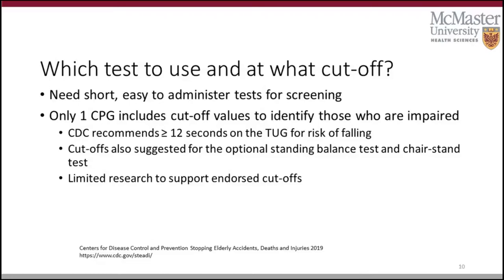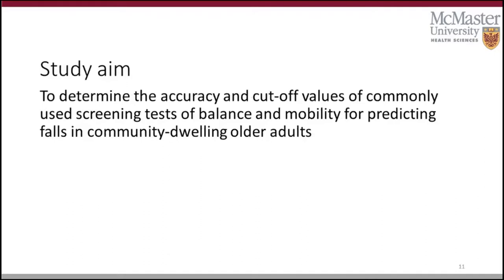A problem with these cutoffs is that there is limited research to support using them. Often the study sample sizes are small or based on a convenient sample, and in some cases they are based on studies where falls are not the primary outcome. The aim of our study was to determine the accuracy and cutoff values of commonly used screening tests of balance and mobility for predicting falls in community-dwelling older adults enrolled in the Canadian Longitudinal Study on Aging.